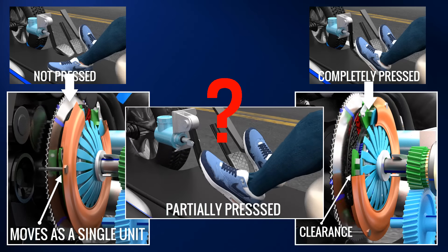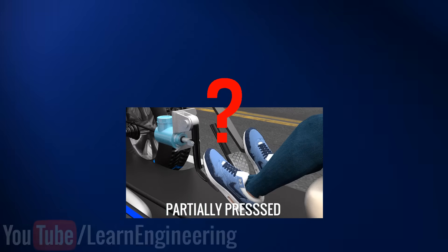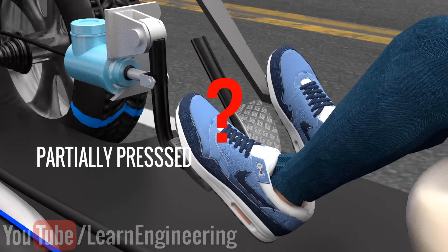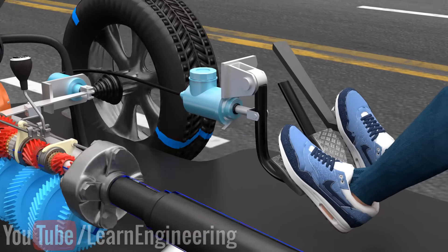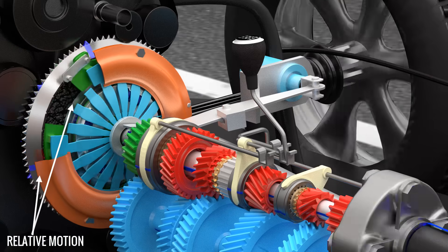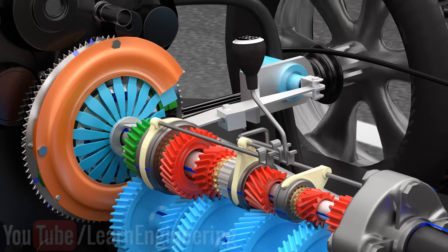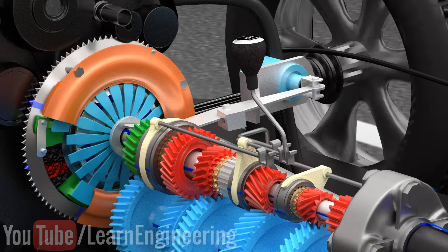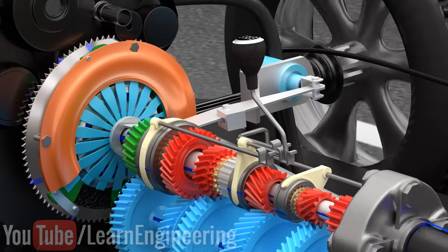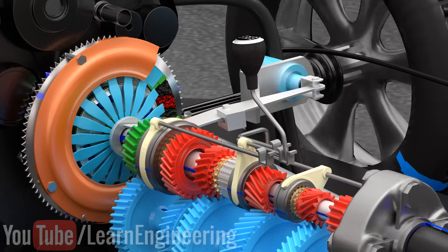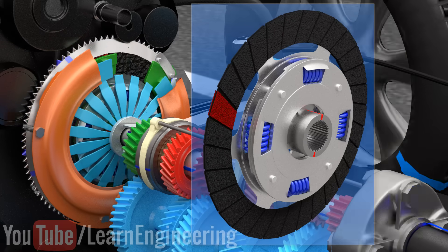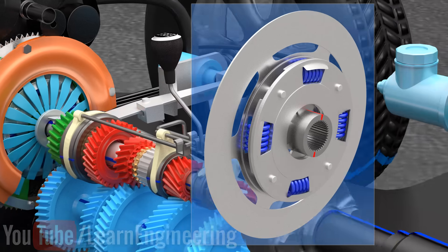But what if you only press the clutch pedal partially? This will reduce the frictional force between the flywheel and the friction disc and relative motion happens between them. This will definitely result in wear and tear of the disc. This is why, when driving a manual transmission vehicle, you should either press the clutch pedal down completely or you should not press it at all. Partial depression of the clutch pedal will damage the friction disc and the flywheel very quickly.